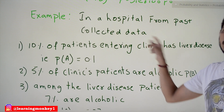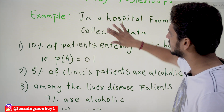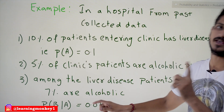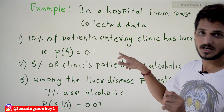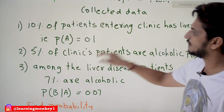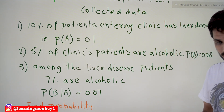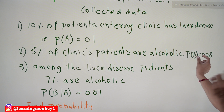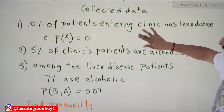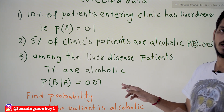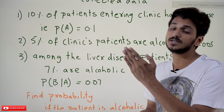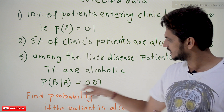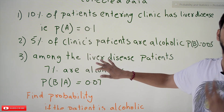In a hospital, from past collected data: it was given that 10% of the patients entering the clinic have liver disease. We call this event A, so probability of A equals 0.1. 5% of the clinic's patients are alcoholic — out of all the patients that come into the clinic, 5% are alcoholic — so probability of B equals 0.05. We call this the alcoholic event, event B. Among the liver disease patients, 7% are alcoholic. This is given as probability of B given A equals 0.07. This data was previously collected from the hospital.